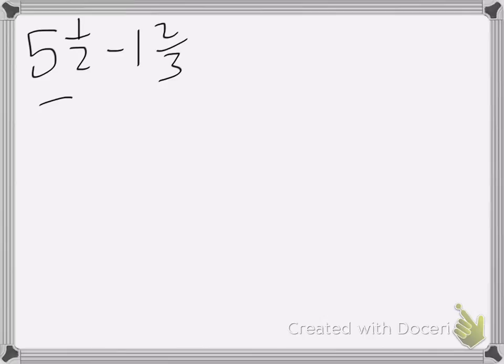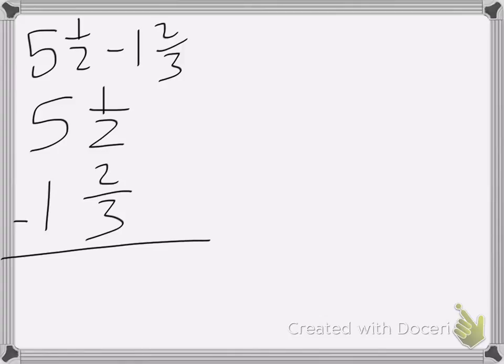So I'm going to rewrite these so they're stacked. Okay, so the common denominator of 2 and 3 would be 6. So I'm going to change these fractions so they're fractions that equal 6. So 5 with something over 6 and 1 with a fraction over 6.